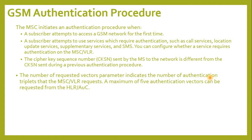The figure shows the GSM authentication signaling procedure. It is noteworthy to identify the scenarios in which the MSC initiates the authentication procedure. First, the MSC initiates an authentication procedure when a subscriber attempts to access a GSM network for the first time, or when a subscriber attempts to use services which require authentication, such as call services, location update services, supplementary services, and SMS. You can configure whether a service requires authentication on the MSCVLR. Also, when the cipher key sequence number sent by the MS to the network is different from the CKSN sent during a previous authentication procedure.